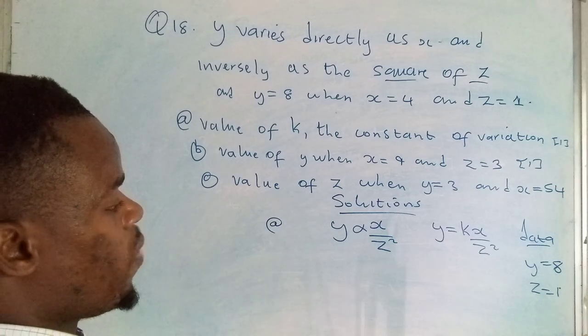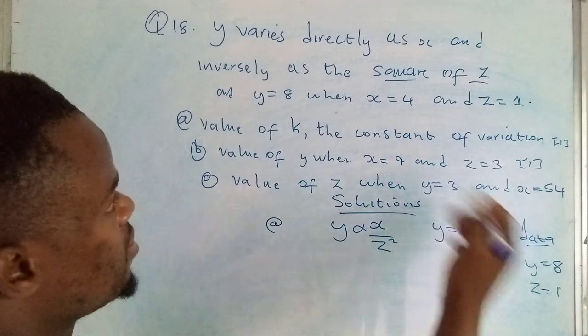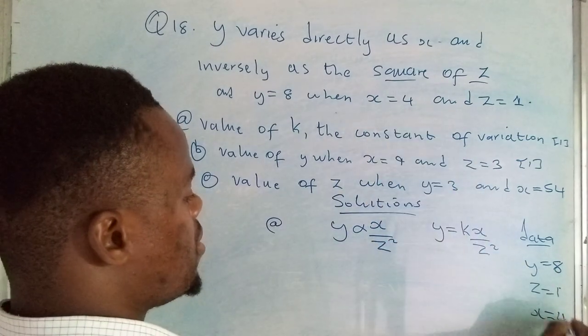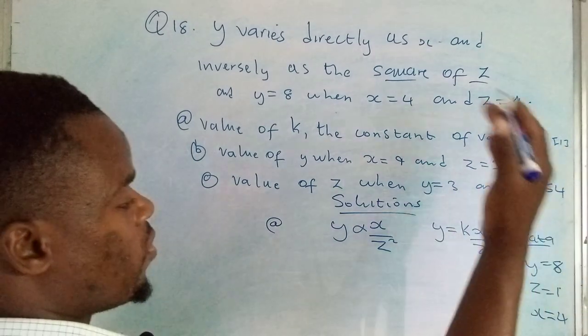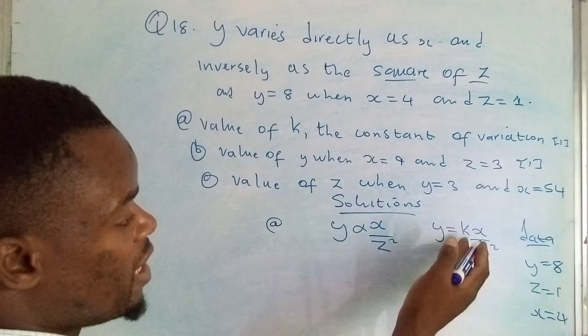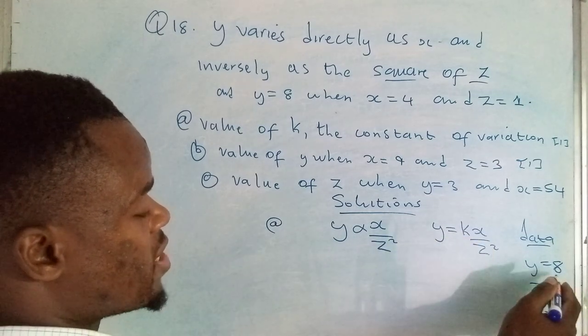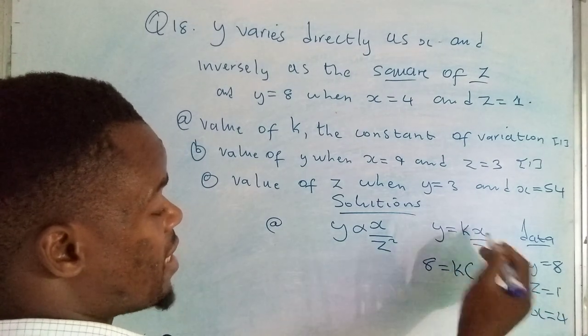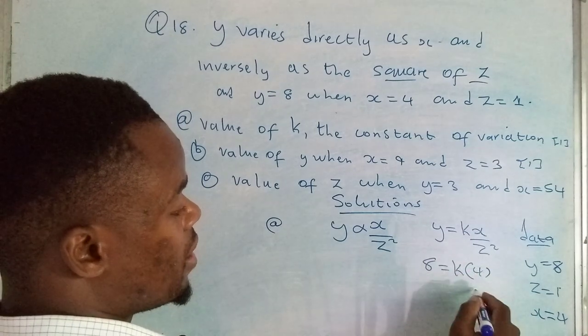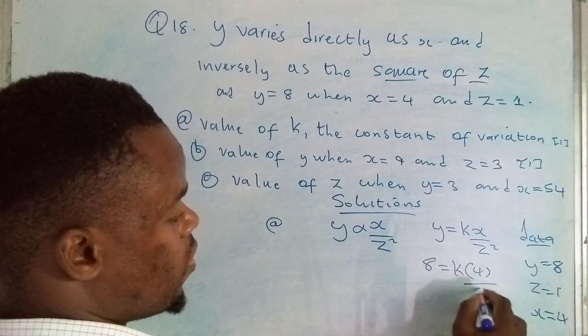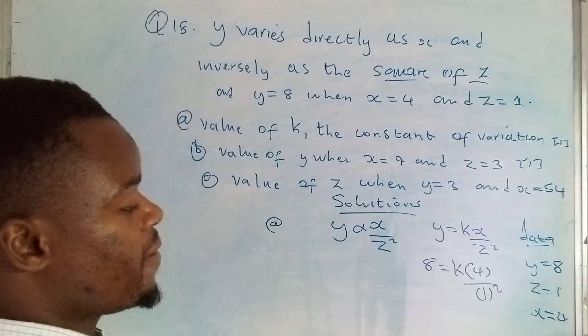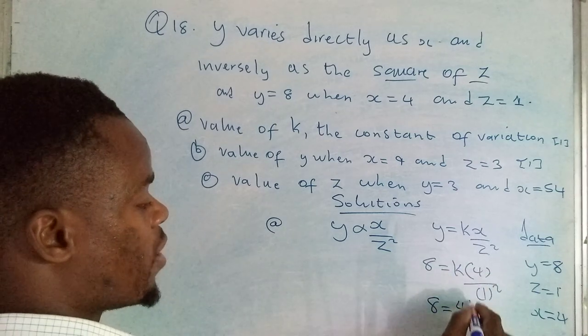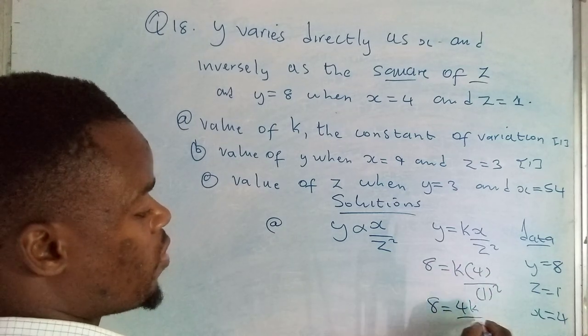We can plug in the values. There's one more which is missing, x, which is 4. We get all those values and plant them in this equation. Where there's y we substitute with 8, where there's x we write 4, and z is 1, so we have to square it. 8 is equal to 4 times k, that's 4k, and then 1 squared is 1.